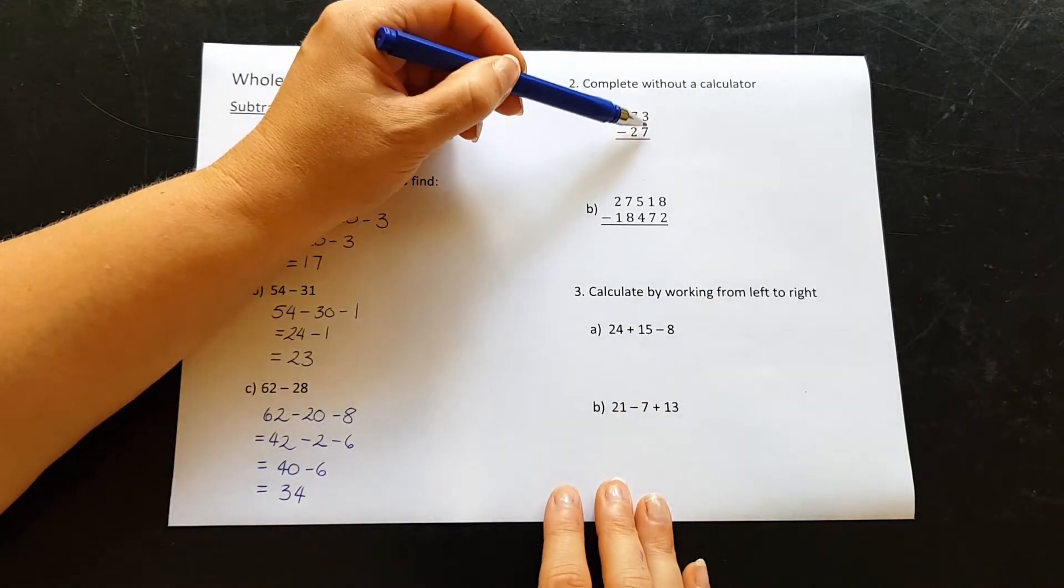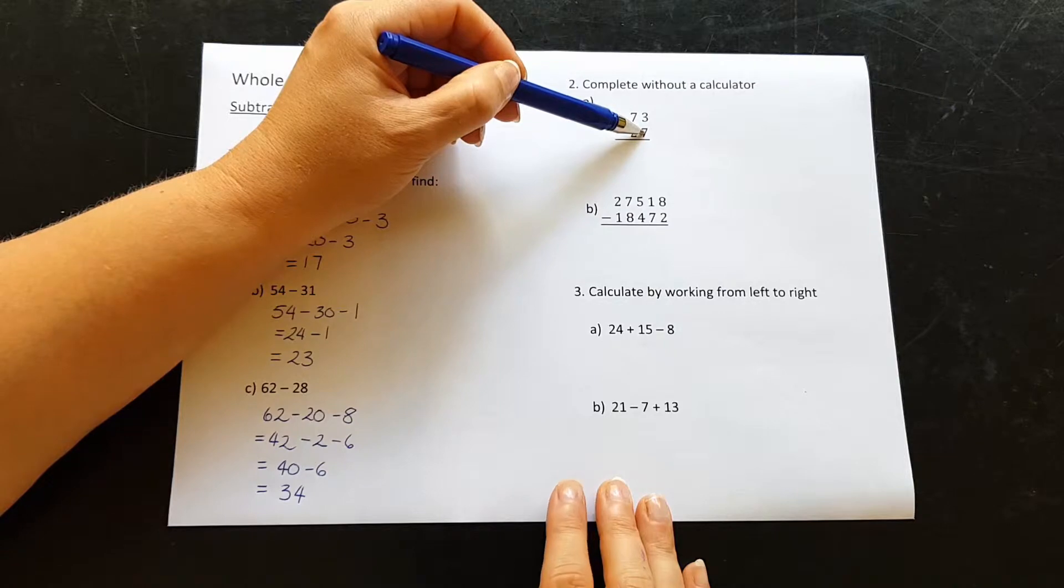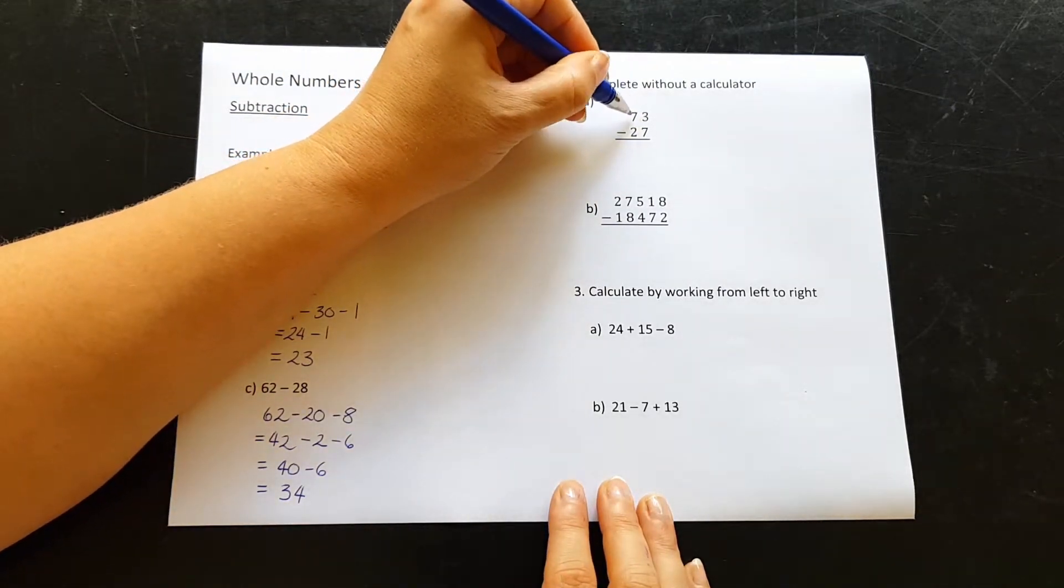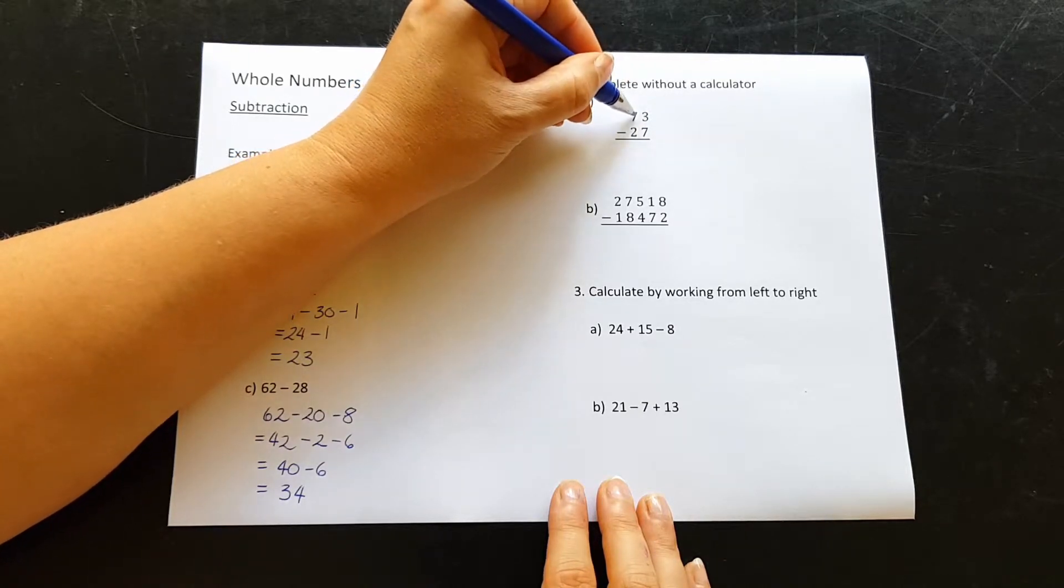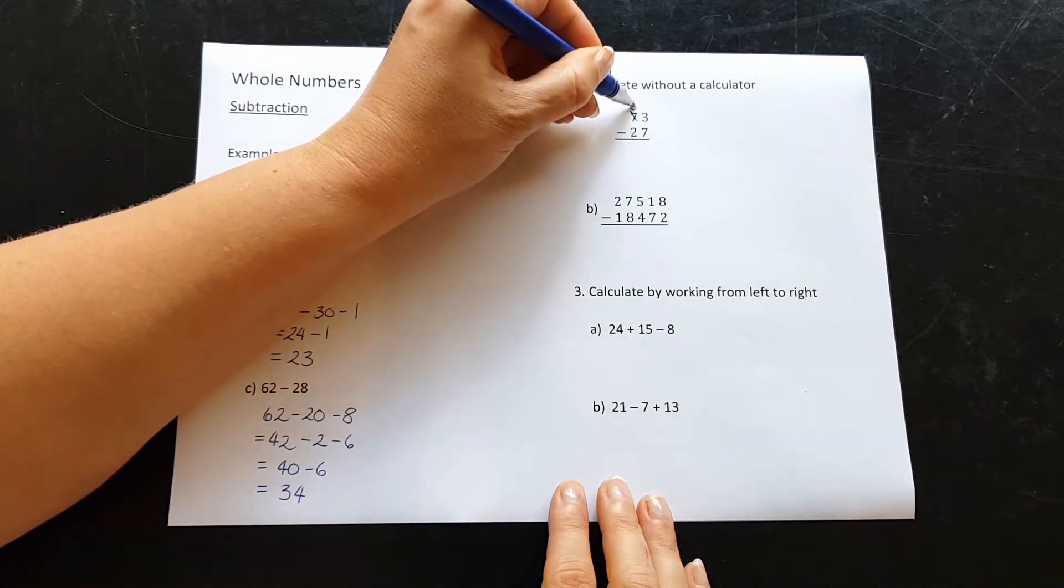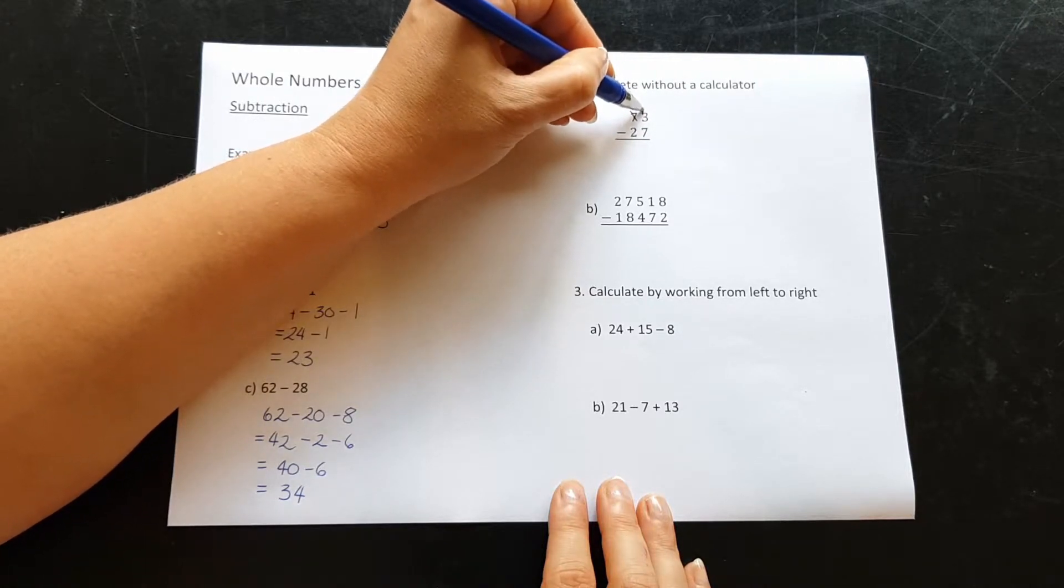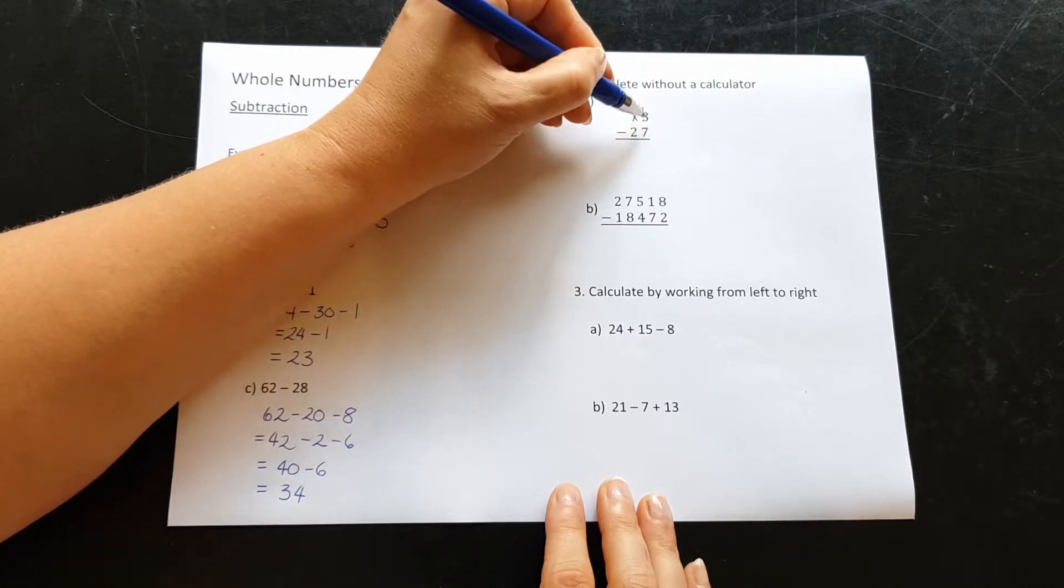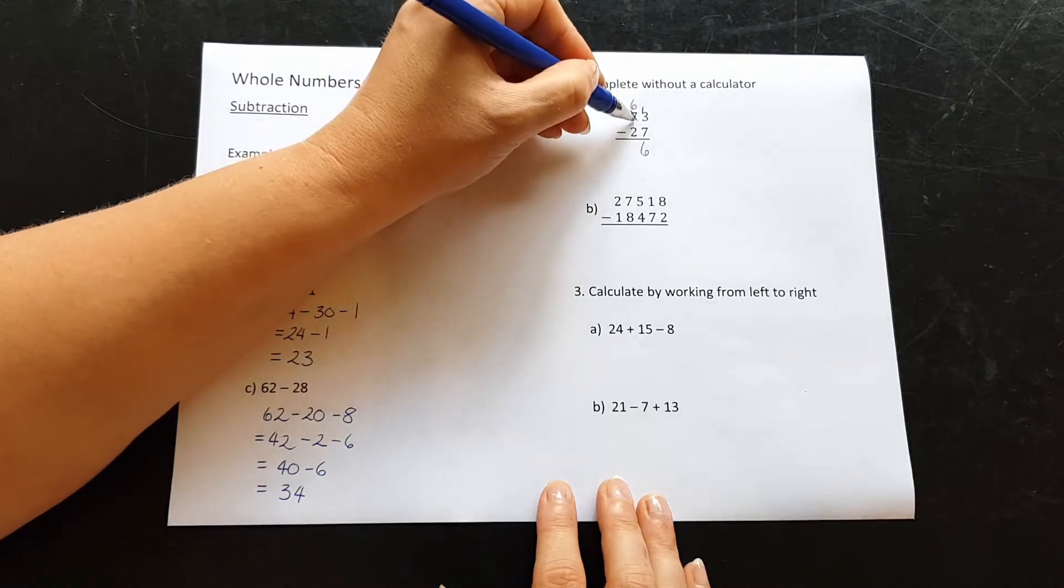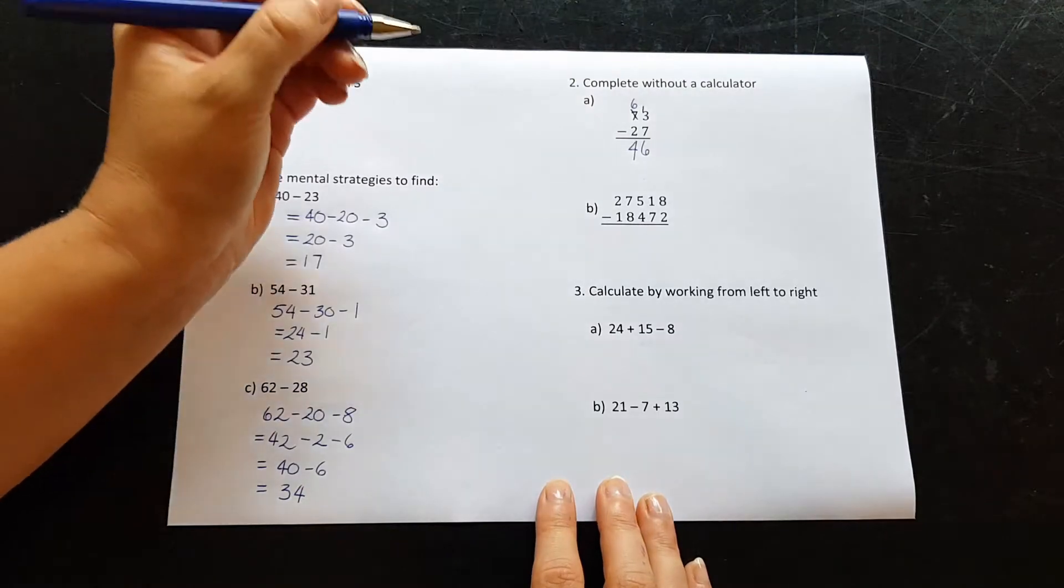We start with the ones column. We want to do 3 take away 7. Now you can't do that. We can't take away 7 from 3. So what we need to do is borrow some more from our tens column. I'm going to borrow 1 from here, changing this to a 6. And I'm going to put that 1 that I borrowed as a 10, it's going to come over here to make 13. 13 take away 7 gives us 6. Now to the tens column. 6 take away 2 is 4. So 46 is the answer.